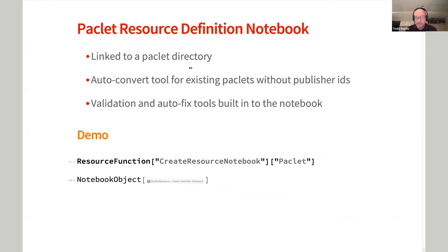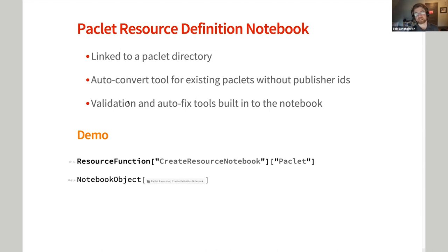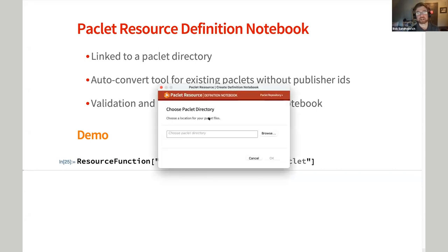The PACLIT resource definition notebook is like the function resource definition notebook if you've ever created a resource function, but different in important ways. It's linked to a PACLIT directory. It has an auto-conversion tool for existing PACLITs that don't have the publisher ID prefix — so if you have something you've made and you want to put it in the PACLIT repository, we're trying to automate that so it all just happens magically. Like the other definition notebooks, it has a suite of validation and auto-fix tools built into the notebook to detect common issues.